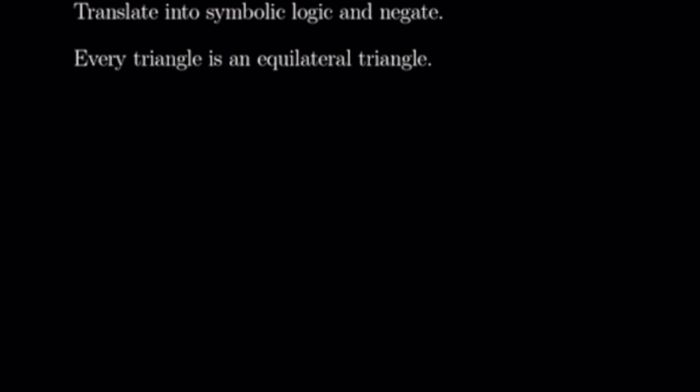This one says: every triangle is an equilateral triangle. I'm going to use similar notation to the last one — the set of all triangles is capital T and the set of equilateral triangles is capital T subscript e for equilateral. So this means: for all x in T, or any arbitrary element of the set of all triangles, x is in T subscript e — meaning that arbitrary element from the set of triangles is an equilateral triangle.